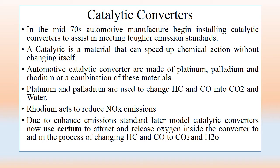A catalytic converter, besides its housing, has three main components: first, the catalyst; second, the substrate or support; and third, the intermediate coat or wash coat. A catalyst is a material that can speed up a chemical action without changing itself. Several types of catalytic materials are used which promote the desired reactions.